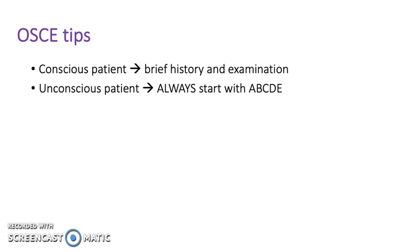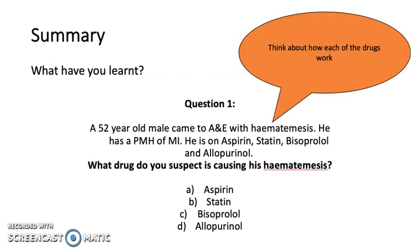A 52-year-old male came to A&E with haematemesis. He has a past medical history of MI and is on aspirin, statin, bisoprolol, and allopurinol. What drug do you suspect is causing his haematemesis? Is it A. aspirin, B. statin, C. bisoprolol, or D. allopurinol? The answer is aspirin, because it is a COX inhibitor.